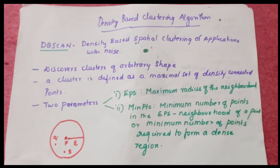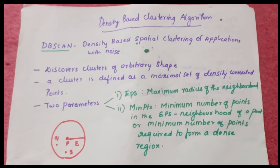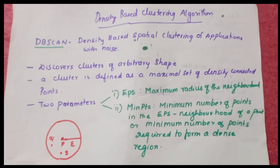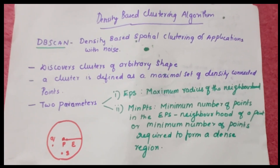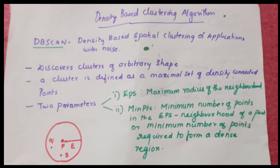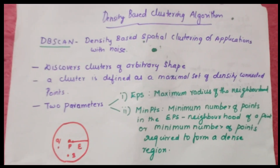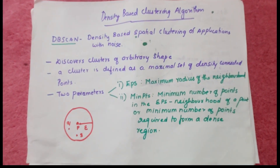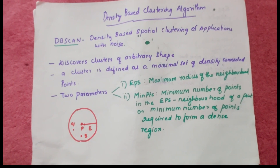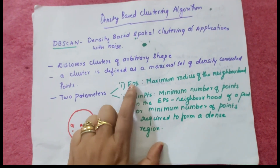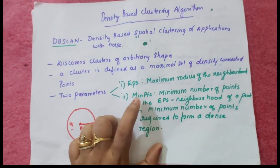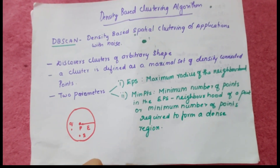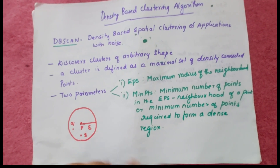We are going to study the density-based clustering algorithm. The main algorithm is DBSCAN — Density Based Spatial Clustering of Applications with Noise. It discovers clusters of arbitrary shape. A cluster is defined as a maximal set of density-connected points. There are two parameters: epsilon and minimum points. Epsilon is the maximum radius of the neighborhood, and minimum points is the minimum number of points required to form a dense region.